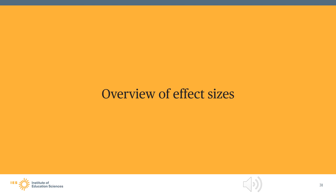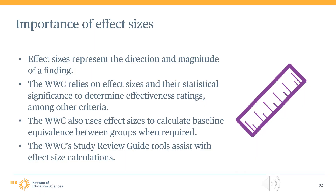In this final section of Module 2, we will now discuss the concept of effect sizes. Effect sizes play an important role in all aspects of the WWC's reporting of study findings. The WWC uses effect sizes to determine the direction of a finding — to assess whether the finding was favorable or unfavorable — and to determine the magnitude or size of a finding.